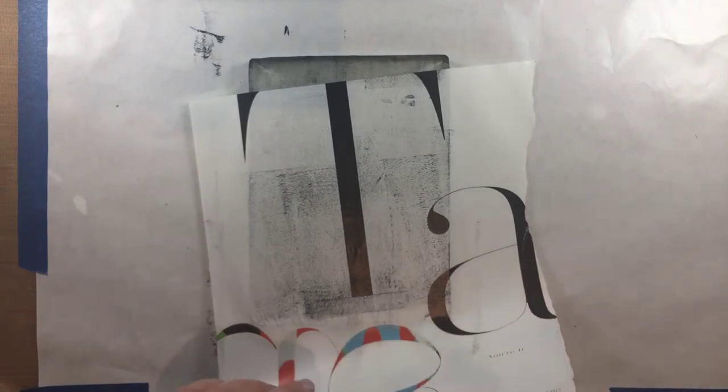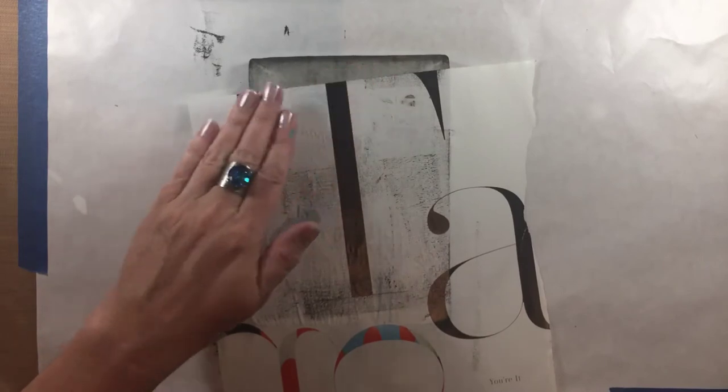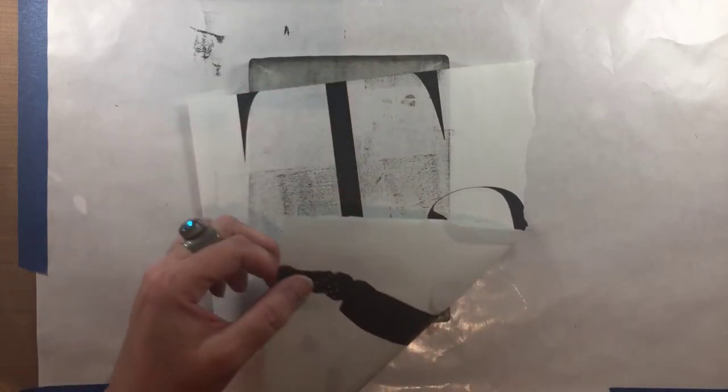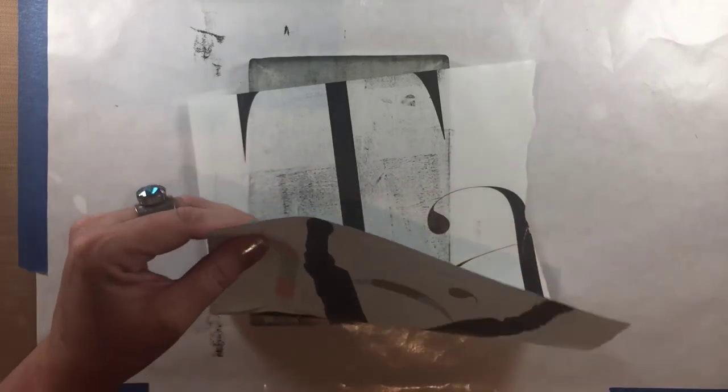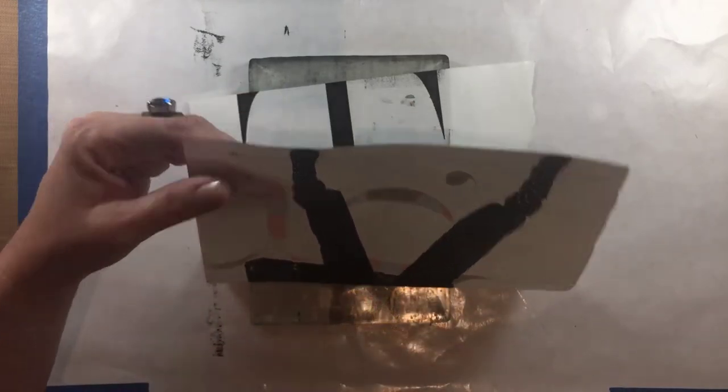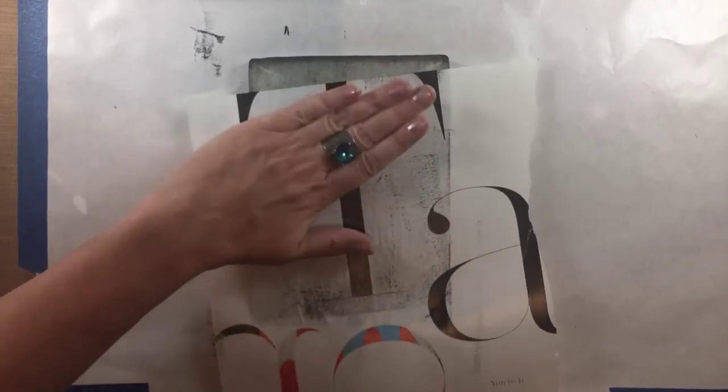So I've brayered over my image, I pressed it down and I'm just gonna slowly peel the magazine page off. The magazine pages cannot be reused once you've done this technique because they are then covered with black paint, so these are single-use. Don't start with your favorite one in case it doesn't work out.